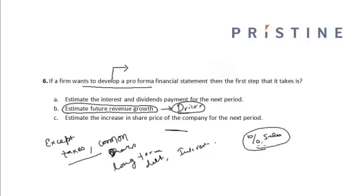Using the cumulative growth method, or CAGR, we can establish the revenue growth for future years. Based on that revenue or sales growth, we can estimate the value of cost of goods sold, total assets, operating income, and many other items in the income statement as well as the balance sheet.